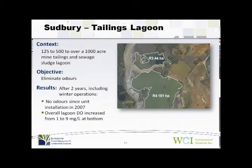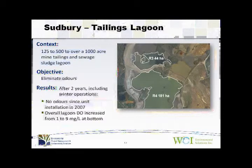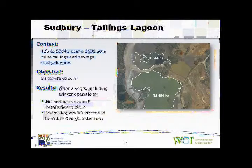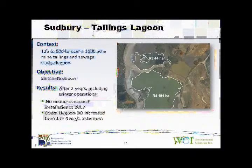This is the aerial picture of the Sudbury Tailings Lagoon. This is an older picture — when we started this project in 2007, the lagoon was only 125 acres. Over time it increased to 500, and today it stands at over 1,000 acres, with a single EOS 2000 unit controlling the entire lagoon. In the right-hand corner you can see a black deposit in the lagoon — that's where the entire city of Sudbury dumps their city's sewage. So this lagoon is getting both industrial tailings and the entire city's sewage sludge.